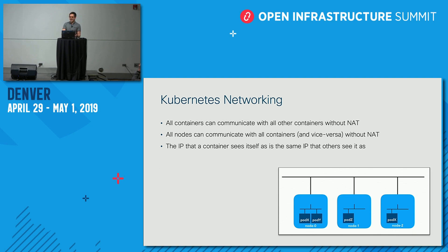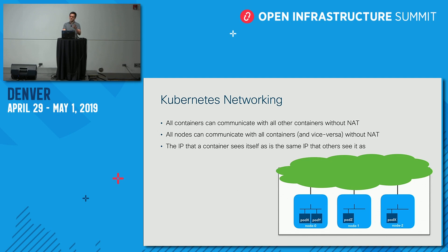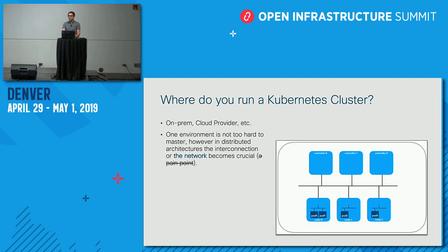The main Kubernetes networking requirements are that all containers can communicate with all other containers without using NAT, and that there is no address translation — containers see the same IP address they originated packets from. Something is done in the underlying network to make this happen.